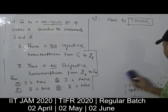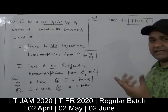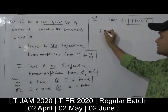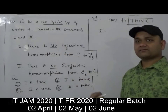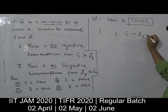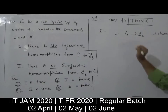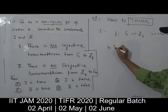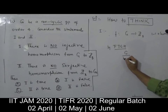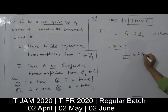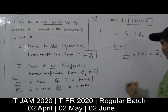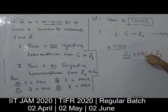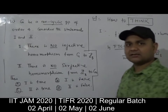Now let me show you how to approach it. Let's consider the first statement — there is no injective homomorphism from G to Z8. Suppose a one-to-one homomorphism exists. By the fundamental theorem of group homomorphism, G modulo kernel of F is isomorphic to F(G). Since Z8 is cyclic, F(G) is a subgroup of Z8, and by the previous theorem, F(G) is also cyclic.